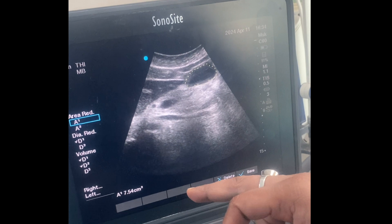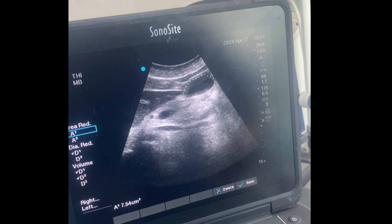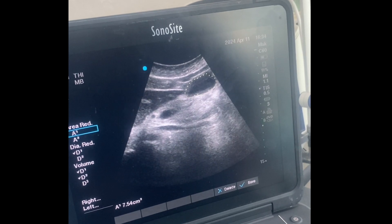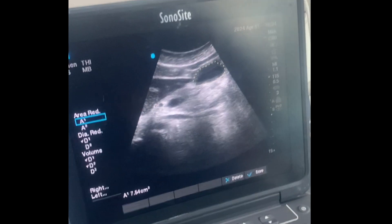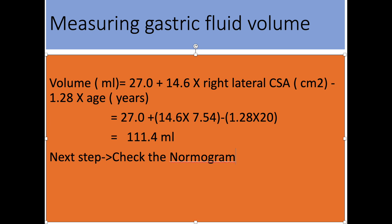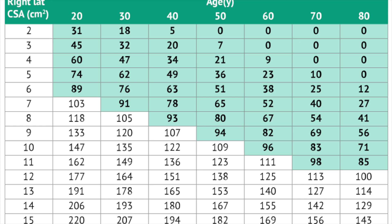The cross-sectional area is 7.54 cm². The patient age is 20 years. When you put these findings into the formula, you get a gastric volume of 111.4 ml. This finding is also consistent with the value of the nomogram — if the cross-sectional area is between 7 to 8 cm², the gastric volume is approximately 111.4 ml.